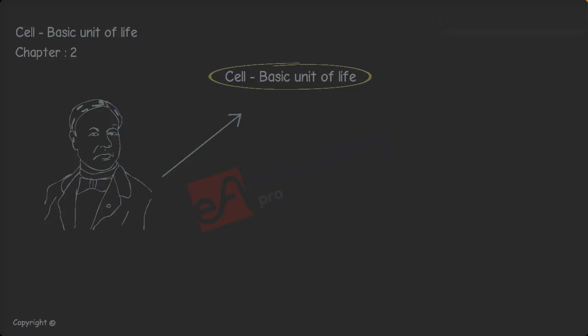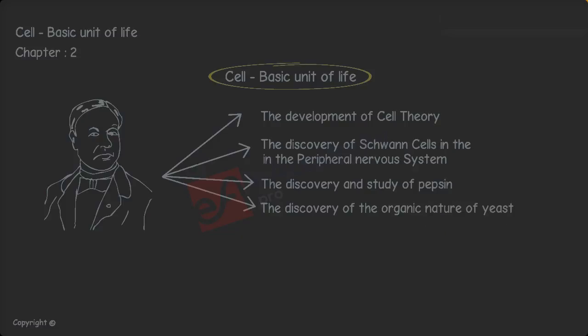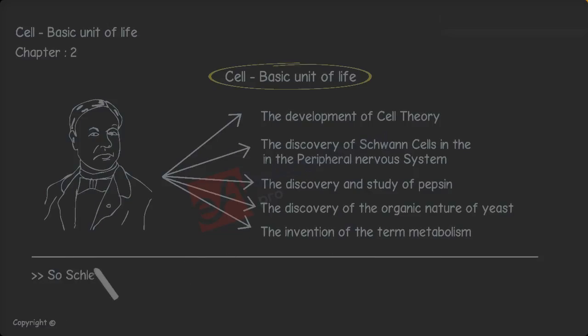His many contributions to biology include the development of cell theory, the discovery of Schwann cells in the peripheral nervous system, the discovery and study of pepsin, the discovery of the organic nature of yeast and the invention of the term metabolism. So Schleiden and Schwann concluded that plants and animals are made up of cells respectively.